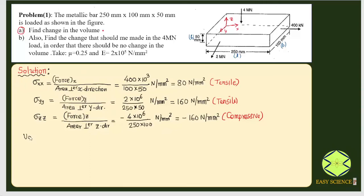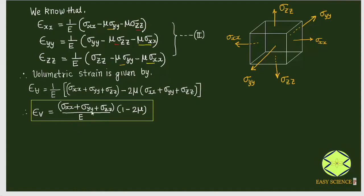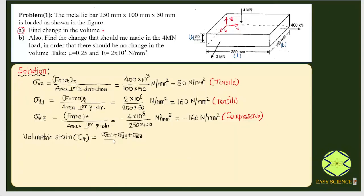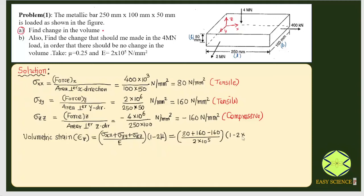Now we can find the volumetric strain. Using the ready-made result, volumetric strain equals (σxx + σyy + σzz) divided by E×(1 − 2μ). Substituting: σxx = 80, σyy = 160, σzz = −160, E = 2×10⁵, and μ = 0.25. So (1 − 2×0.25) = 0.5. The value turns out to be 0.0002.